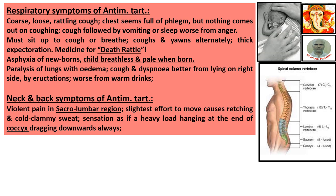Neck and back symptoms: violent pain in the sacro-lumbar region. The slightest effort to move causes retching and cold clammy sweat. Sensation as if a heavy load is hanging at the end of the coccyx, dragging downwards. The spine has 7 cervical, 12 thoracic, 5 lumbar, 5 sacral, and 4 coccygeal vertebrae. The lumbosacral region is where the violent pain is felt. Adults have 26 vertebrae total, but at birth we have 33.